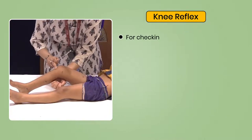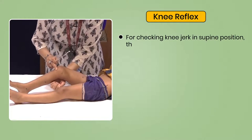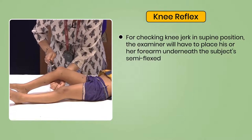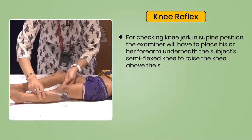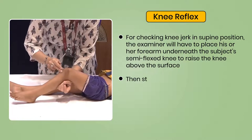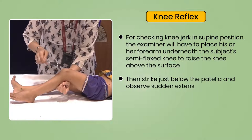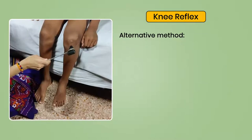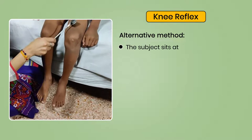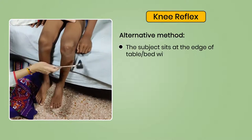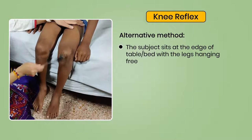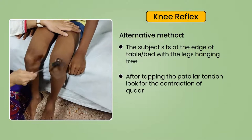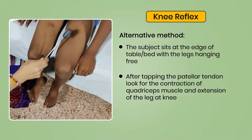For checking the knee reflex in the supine position, the examiner places their forearm underneath the subject's semi-flexed knee to raise it above the surface. Then strike just below the patella and observe sudden extension of the knee with contraction of the quadriceps muscle. An alternative method: the subject sits at the edge of the table with legs hanging free. After tapping the patella tendon, look for contraction of the quadriceps muscle and extension of the leg and knee.